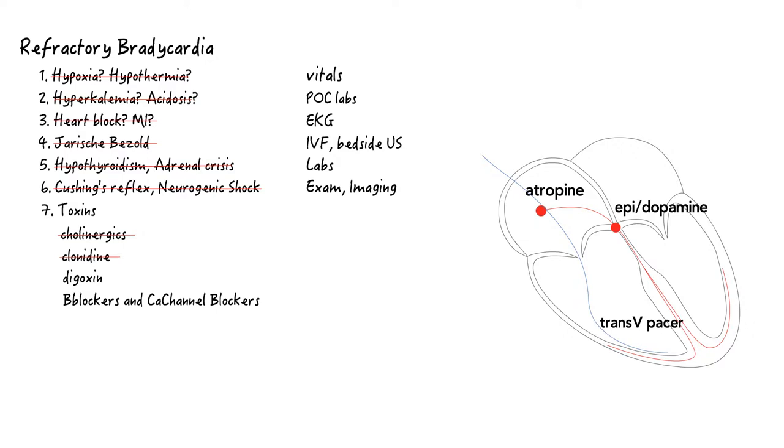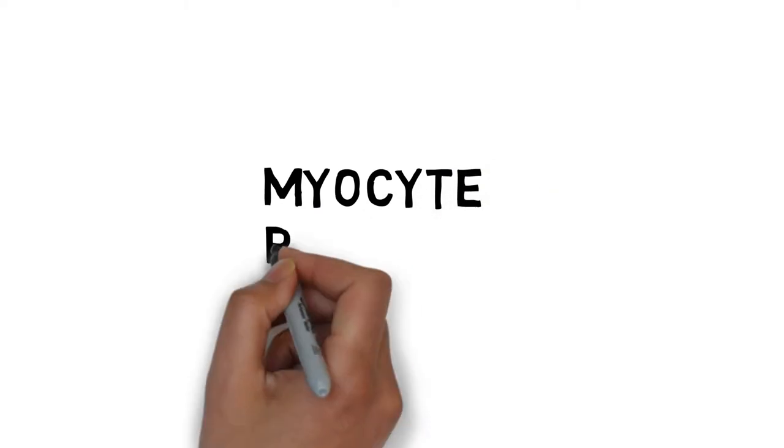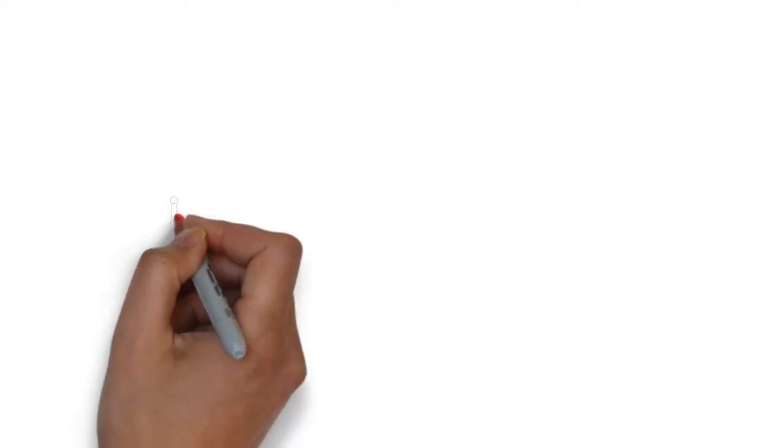To summarize, if atropine and epinephrine did not work, then you are dealing with high degree heart block or etiologies affecting the myocytes at a cellular level. Dig, beta blocker, and calcium channel blockers can cause refractory bradycardia because they act on the cellular level.